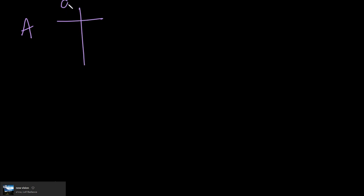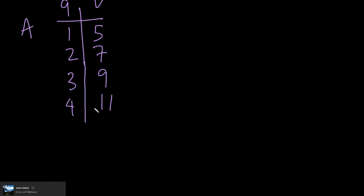Let's start with option A. We're given Q and V — you can think of this as X and Y. The values are: Q=1, V=5; Q=2, V=7; Q=3, V=9; Q=4, V=11. What we have to do is take consecutive Y values and find the difference between them. We focus on the Y values because X is our independent variable and Y is our dependent variable.